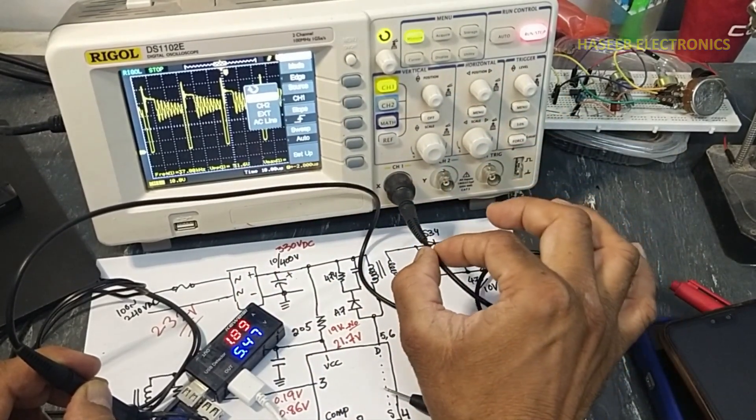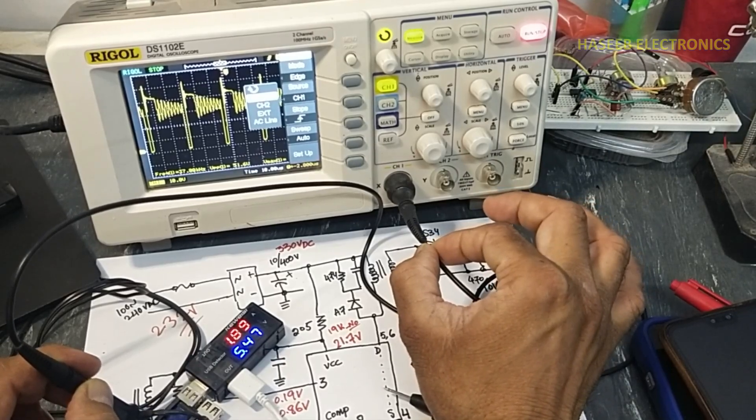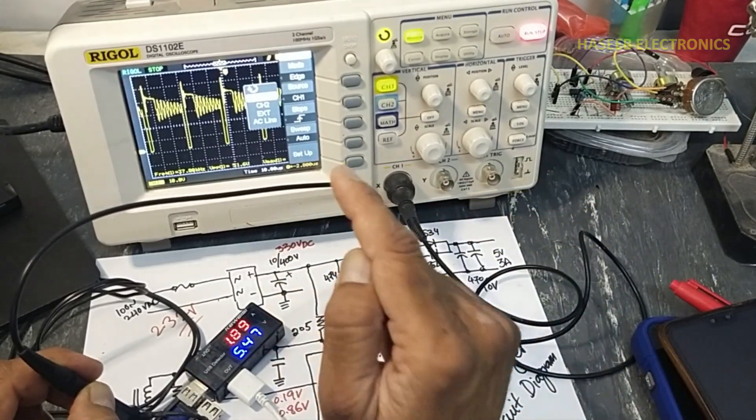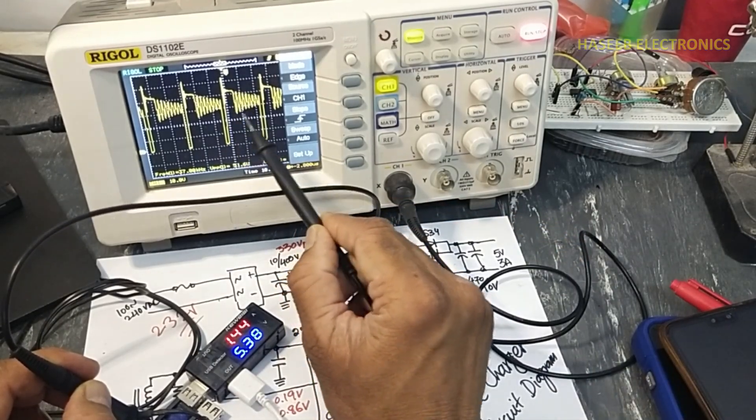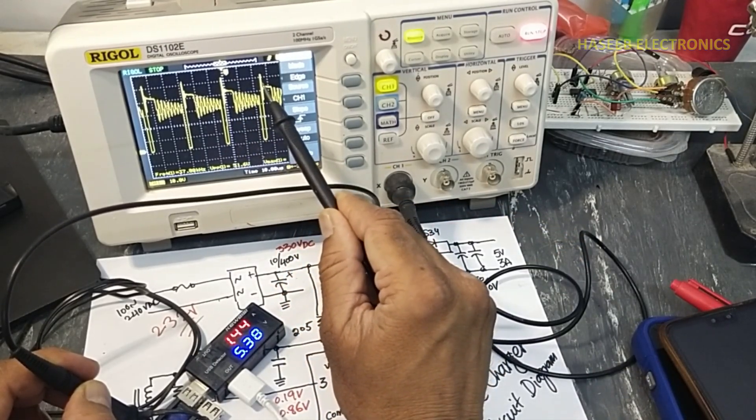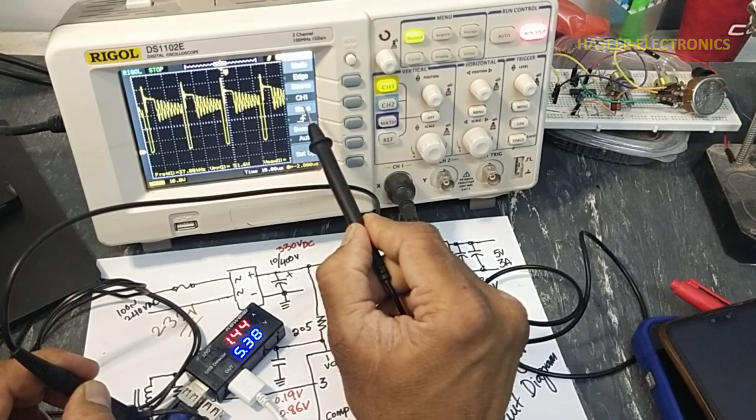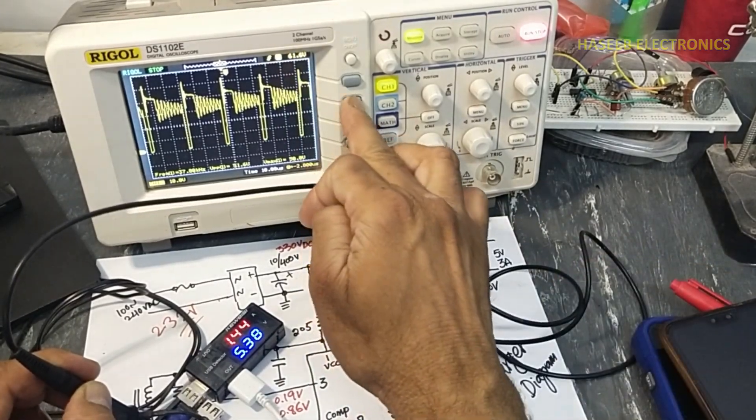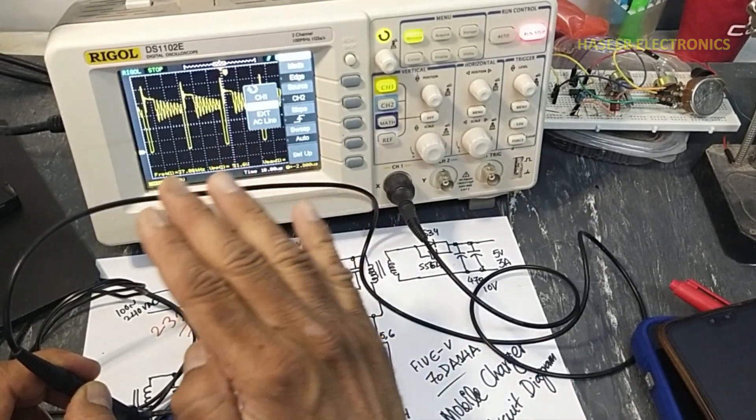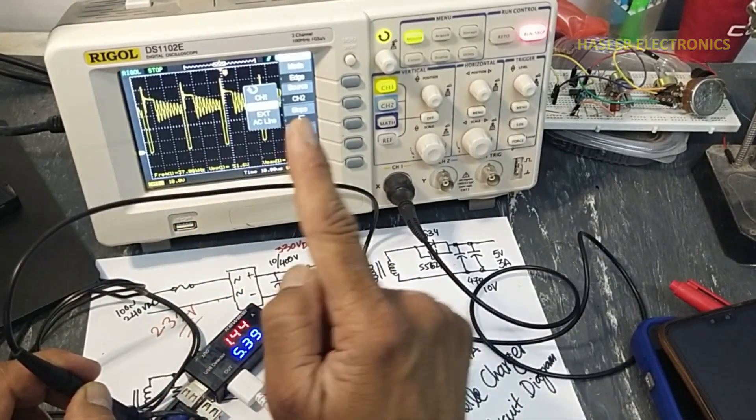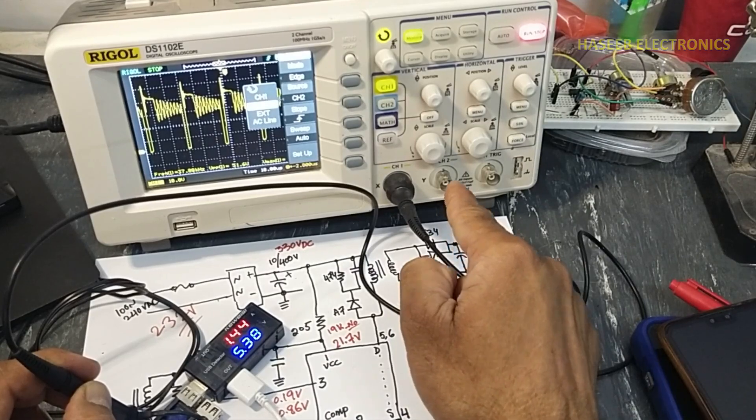The very important thing is from which source we are triggering. If we are using signal at channel number one, from same signal we want to trigger it. This signal is coming at channel one, it will start to record that pulse from here. So we say channel number one. If I will select channel two, at that time its display will not stable until we provide signal at channel two.